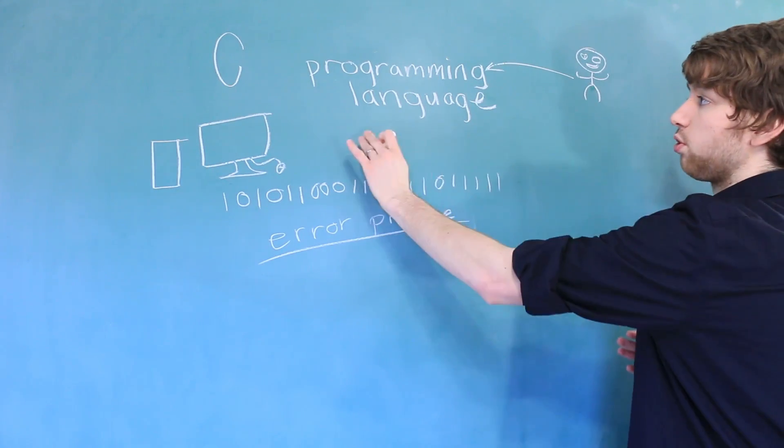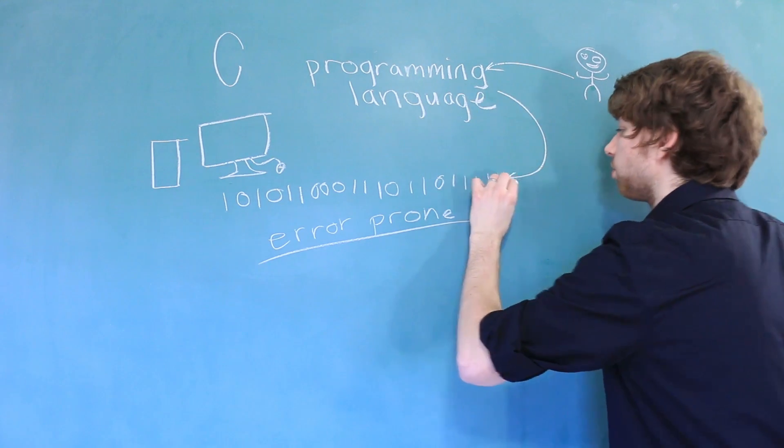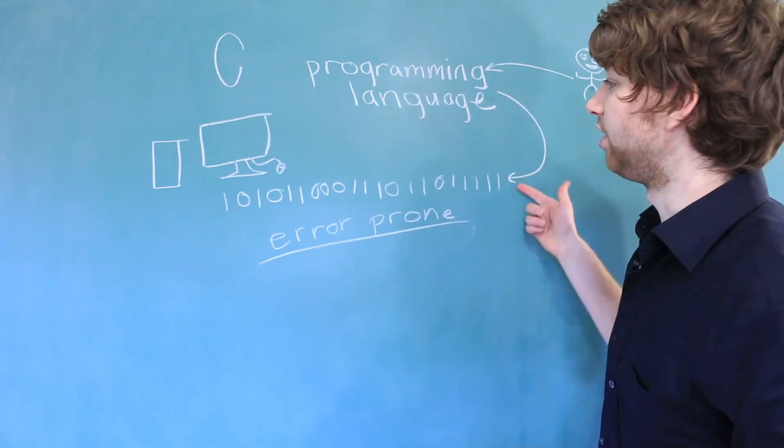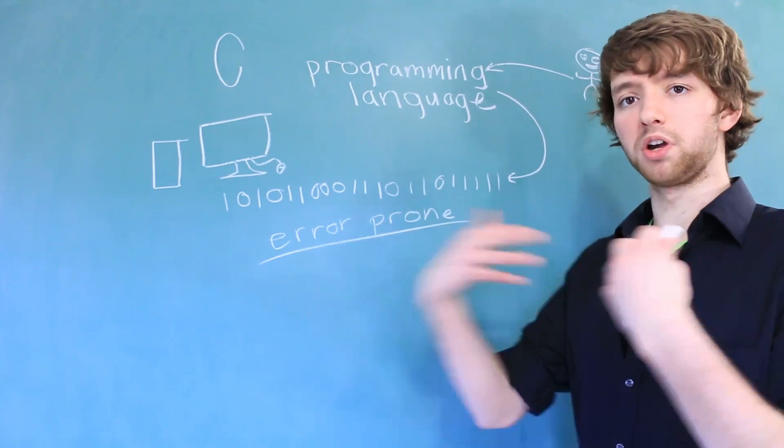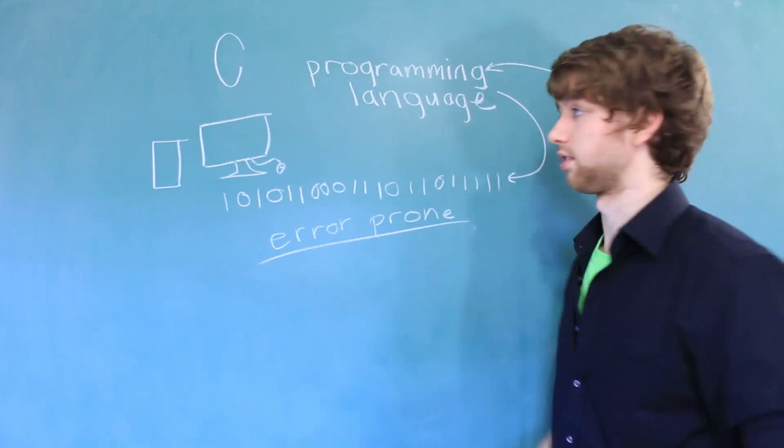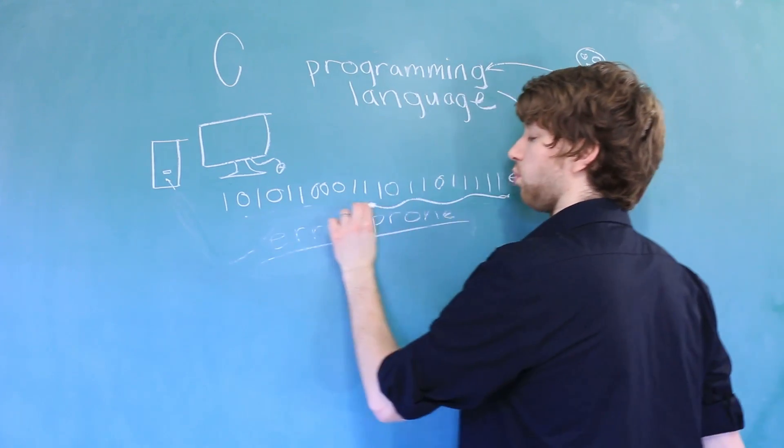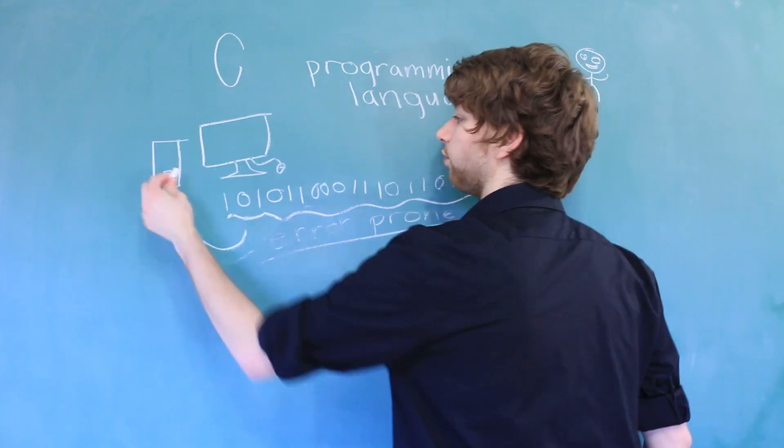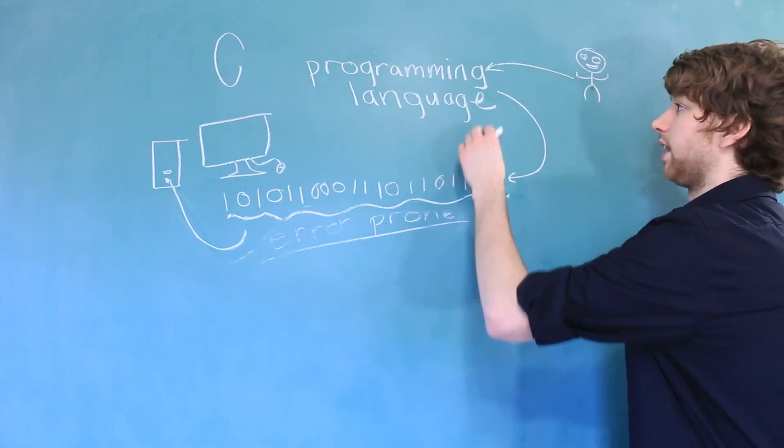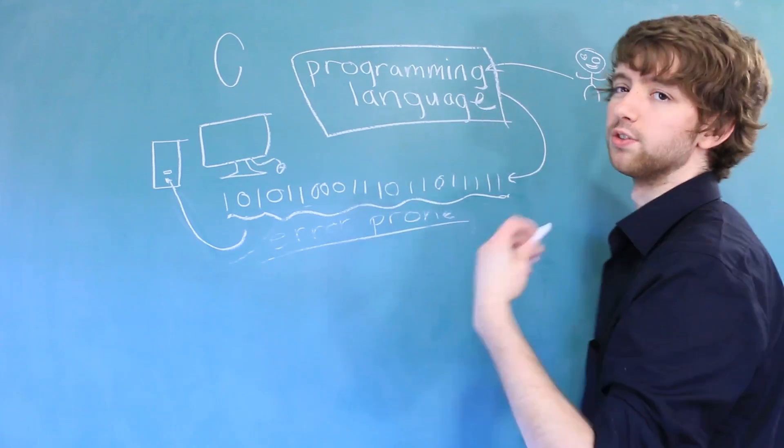So, us humans, we learn the programming language, and then the programming language converts whatever we put into that into machine code. You can think of the machine code as individual commands that we tell the computer's processor. So, inside of the computer, there's this little processor, and all of these ones and zeros translate into commands for this processor. Programming languages make it easier for humans to tell computers what to do.